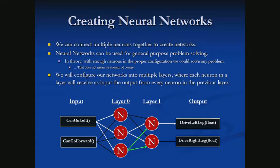When we're setting up our neural network, we're going to do it in multiple layers. You should be able to see the input layer, layer 0, layer 1, and the output. Our input layer is just the input information into our network — whatever information it needs to make a decision. The output layer is the decision that was made.